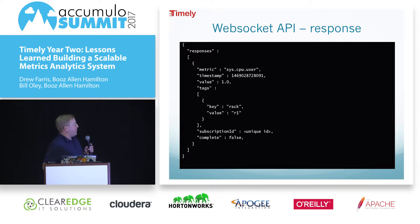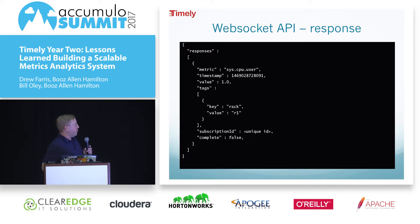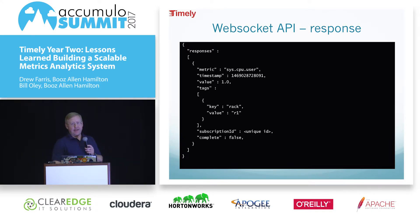The response is exactly what you would expect: the metric, timestamp, values, all of the tags included in the data — which can sometimes be quite a bit — and then the subscription ID to demux, and a complete flag set to false. That lets you know when it's finally reached the end of the data so you can start any follow-on analytics required.